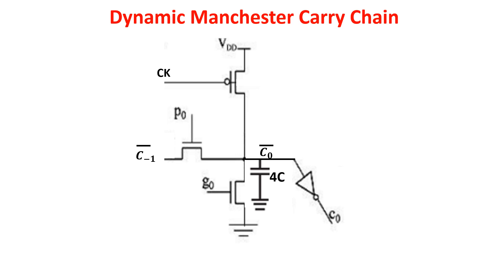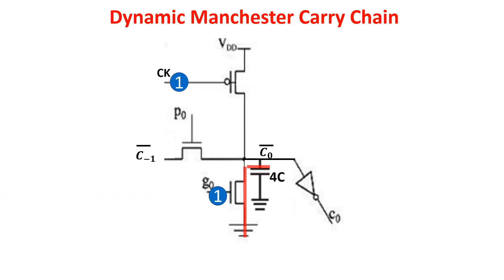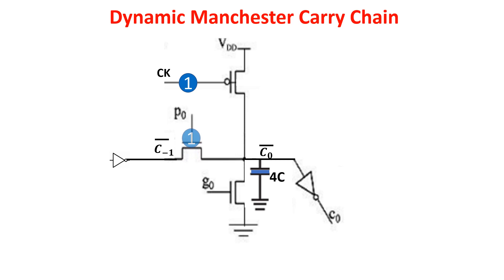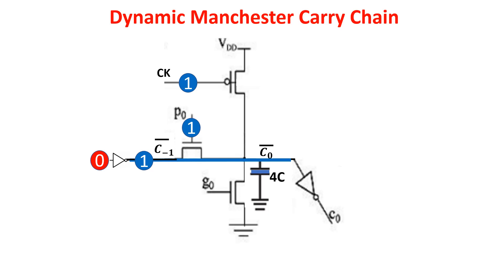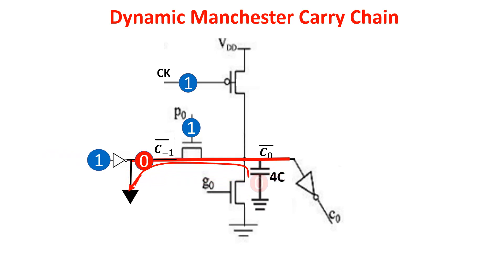We can save some room with a configuration requiring one less transistor. When the clock is zero we have the pre-charge phase. When the clock is one we process generation and propagation bits. If G is one, the capacitor discharges through the NMOS and a zero is created at the output, so carry out C0 is at one, as it should be in generation mode. In propagation mode with a previous carry of zero, the capacitor remains charged and C0 is at zero, so the carry passes unchanged. If the previous carry is one, the capacitor discharges and the one passes unchanged. So we see the carry propagates unchanged.